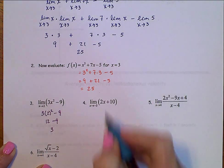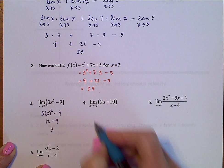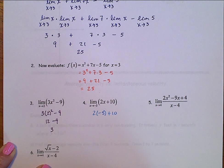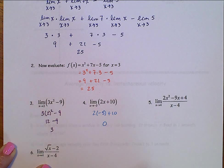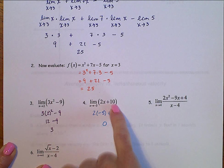How about this one? The limit as x approaches negative 5 of 2x plus 10. That's 2 times negative 5 plus 10, or negative 10 plus 10, which is 0. So, as the x values get close to negative 5 for 2x plus 10, the y values get close to 0.